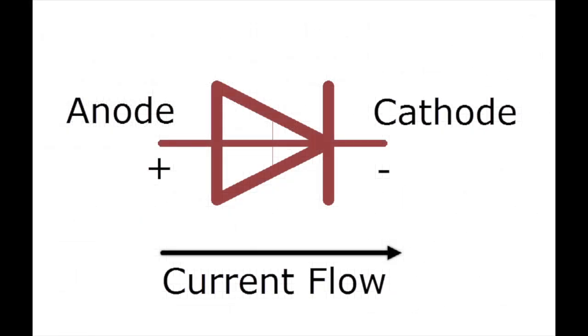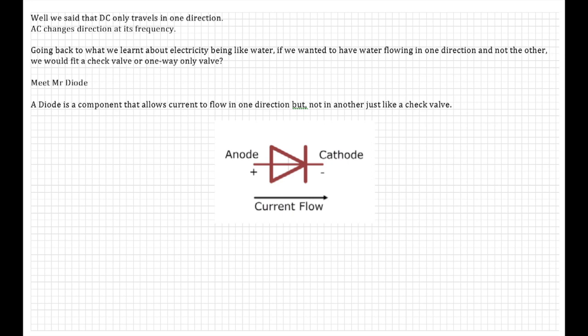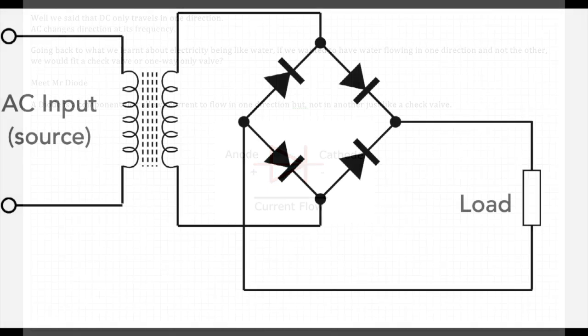This is a diode. This is the electrical symbol we use for a diode. Now don't worry, we're not going in-depth electronics, but you need diodes to change AC to DC. Remember we said that DC travels in one direction and AC changes direction at its frequency. Going back to what we learned about electricity being like water, if we wanted to have water flowing in one direction only and not the other, we would use a check valve or a one-way valve wouldn't we? So meet Mr. Diode. A diode is a component that allows current to flow in one direction but not in another, just like a check valve. Now diodes are what's called semiconductors. There's a lot of diodes on your boat. They're in the back of your alternator, they're on your charging circuits, and they're in your solar panels if you've got them.